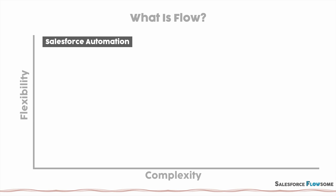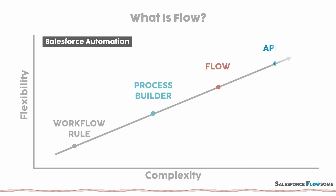So if we put these two factors on a plan, we can actually draw all the automation tools on a straight line. This is telling us that all the Salesforce automation tools — their complexity and flexibility are proportional, meaning if it is easy to use, there will be a lot of limitation. On the other hand, if it's really hard to use, you can achieve a lot more things with it.